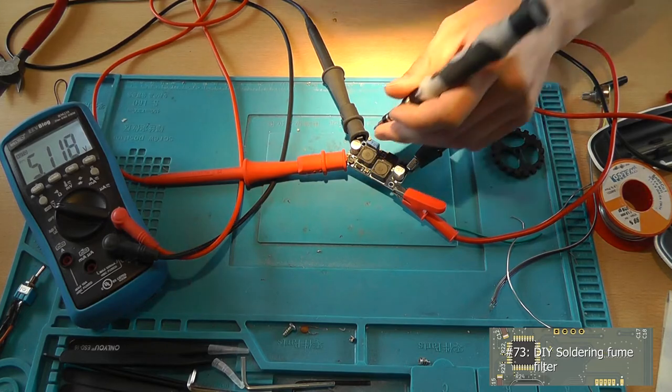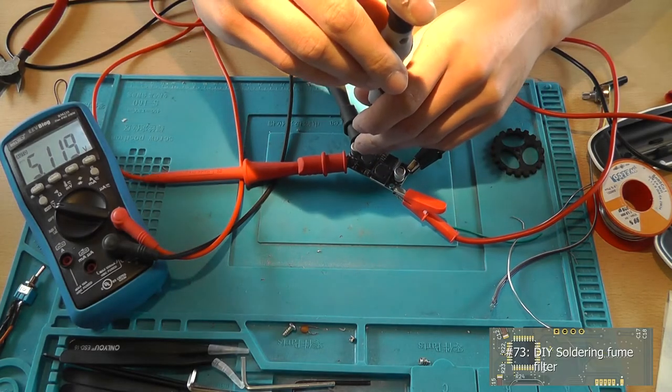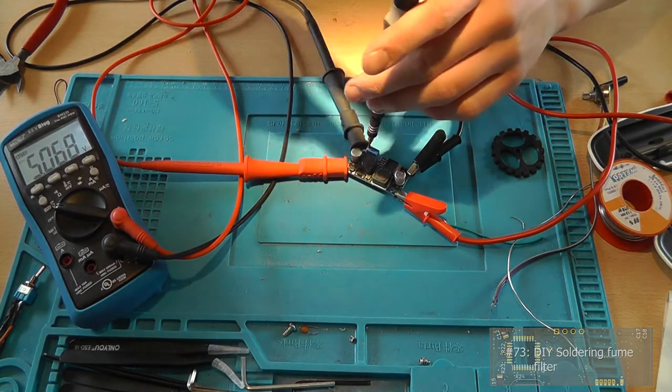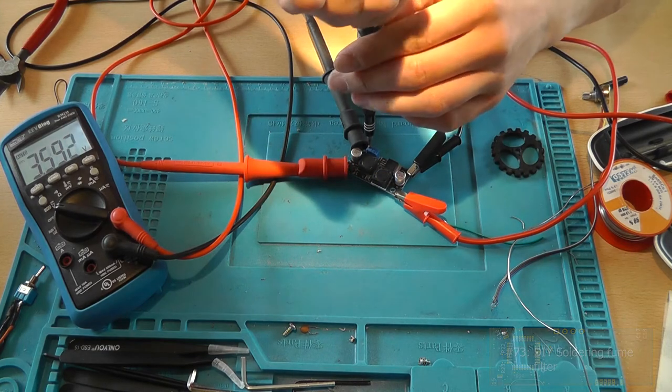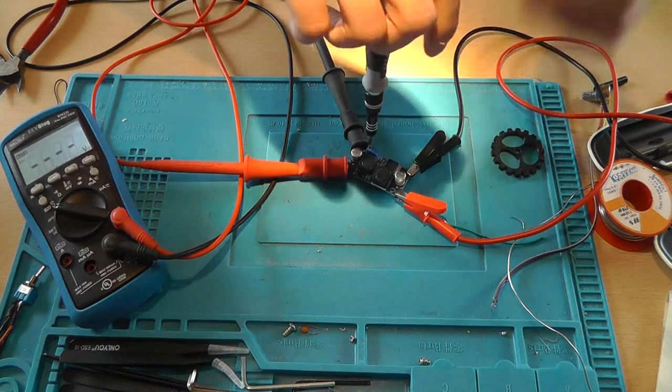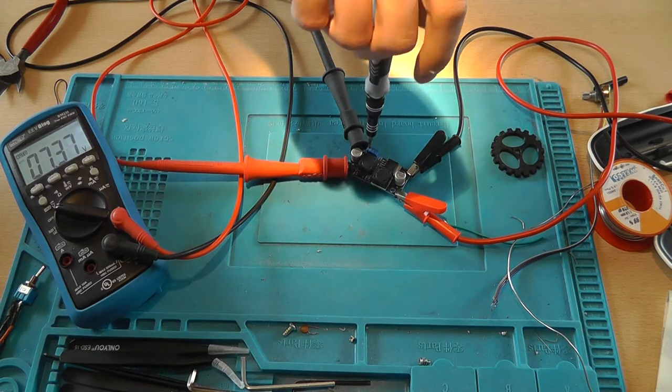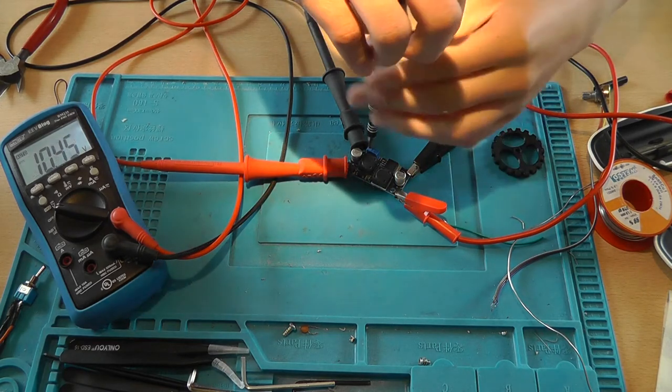As you might have seen, I already tried to use the MT3608, but that didn't work out very well. If you turn the trimmer pot too low, the device will short circuit and basically just blows itself up.